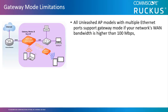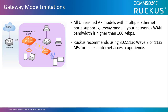When configuring the master AP in the gateway mode, there are a few limitations compared to the typical install. All Unleashed AP models with multiple Ethernet ports support gateway mode if your network's WAN bandwidth is higher than 100 Mbps. However, we recommend using 11AC Wave 2, or even better, 11AX APs for the fastest internet access experience. The more horsepower, the better.